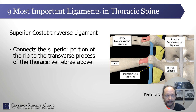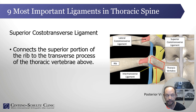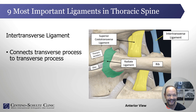The third is the superior costal transverse ligament, depicted here in the posterior view. This is the transverse process. It comes from the superior aspect of the rib and then extends up to the transverse process of the level above. It provides critical stability for that costal transverse joint, which in previous discussions we've identified as a source of thoracic pain.